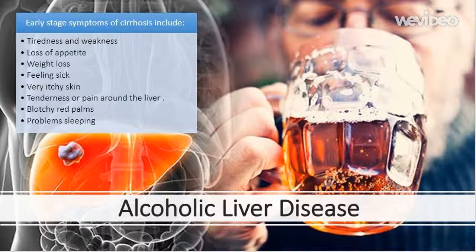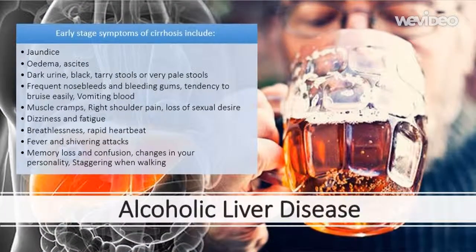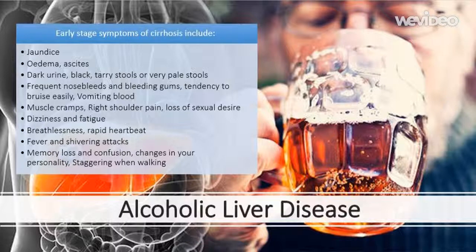Additional early stage symptoms include blotchy red palms and problems sleeping. End stage symptoms include jaundice, hair loss, edema — buildup of fluid in the legs, ankles and feet — ascites — buildup of fluid in your abdomen that can make you look heavily pregnant — dark urine, and black tarry or very pale stools.